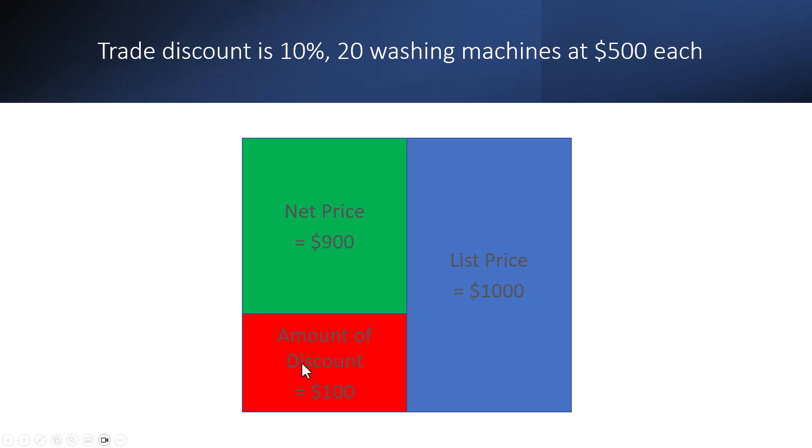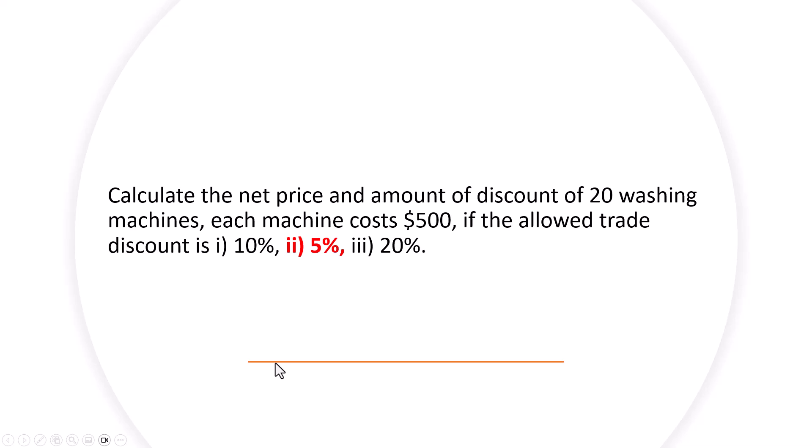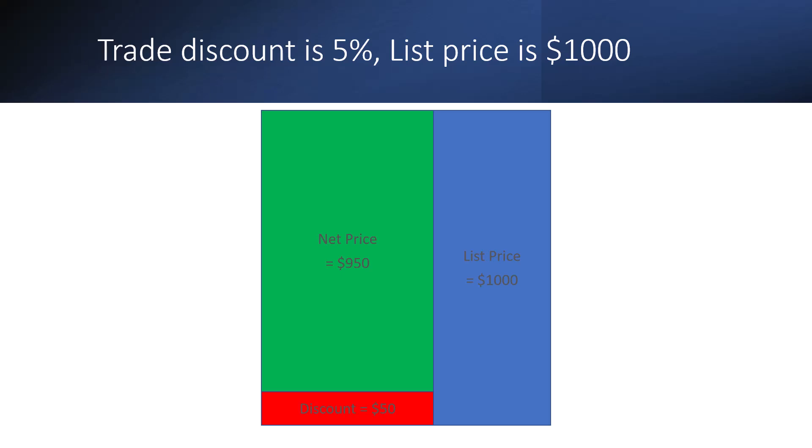What happens in our next problem when we decrease the trade discount? Imagine decreasing the trade discount — the list price stays the same, it does not change as you change the trade discount. But now the amount of discount is a lot lower because 5% of $1,000 is $50, and the net price has increased to $950. So when the trade discount decreased from 10% to 5%, the amount of discount decreased, which meant the net price increased.